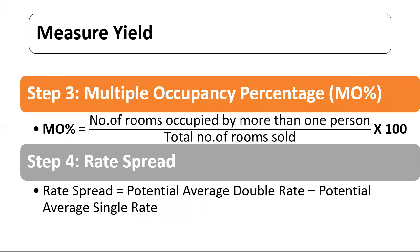Step three: Multiple Occupancy Percentage. It is calculated as the ratio of the number of rooms occupied by more than one guest to the number of occupied rooms. It is important because it indicates sales mix and helps balance rates with future occupancy demand. Formula: number of rooms occupied by more than one person upon total number of rooms sold, multiplied by 100.